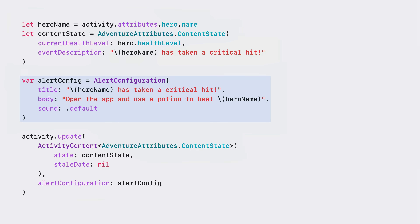Since the hero's health level reduced significantly, I need to send an alert. I'll create an alert configuration for that. This will display an alert on iPhone, iPad, or on a synced Apple Watch if some significant information changes with the live activity. In this case, the hero is injured badly and needs a potion to heal. The configuration title and body are only used on Apple Watch and displayed as a notification. On iPhone and on iPad, the activity UI with the updated content appears with the specified sound. Now I can call the update API on the activity object with the updated content and the alert configuration.